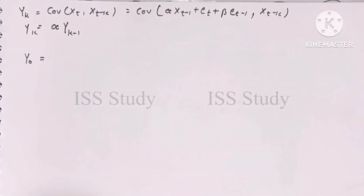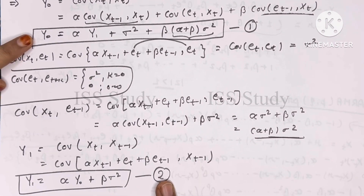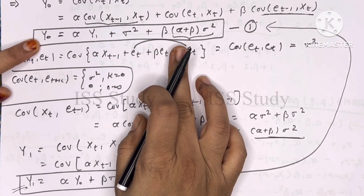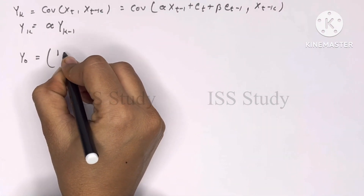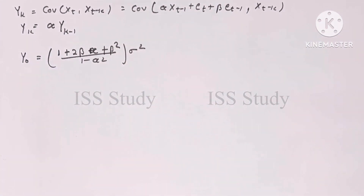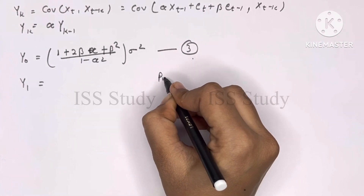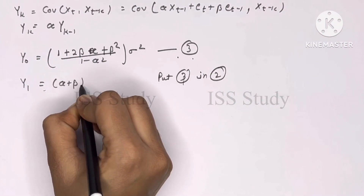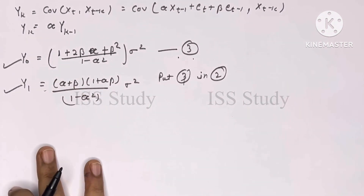We can find gamma_0 by substituting equation 2 into equation 1. The final value of gamma_0 is: (1 plus 2*beta*alpha plus beta^2) / (1 minus alpha^2) times sigma^2. Then, substituting equation 3 (gamma_k = alpha*gamma_{k-1}) into equation 2, we get gamma_1 equals (alpha plus beta)*(1 plus alpha*beta) / (1 minus alpha^2) times sigma^2.